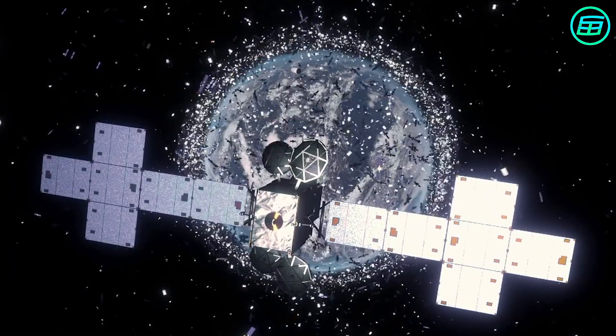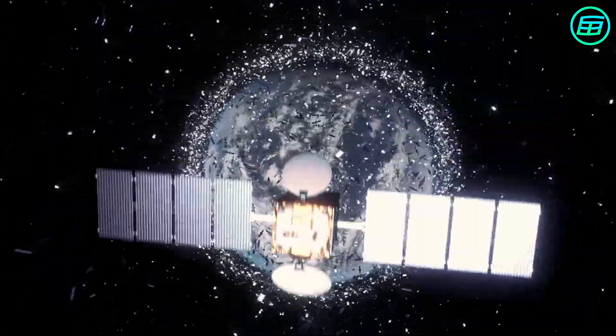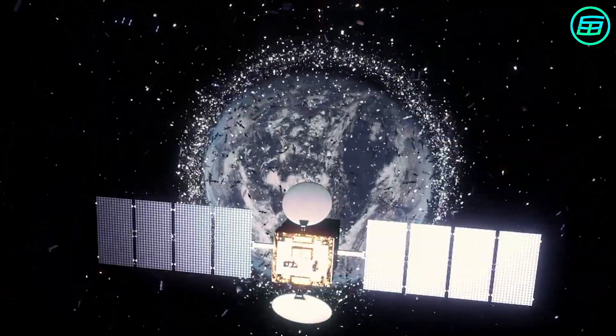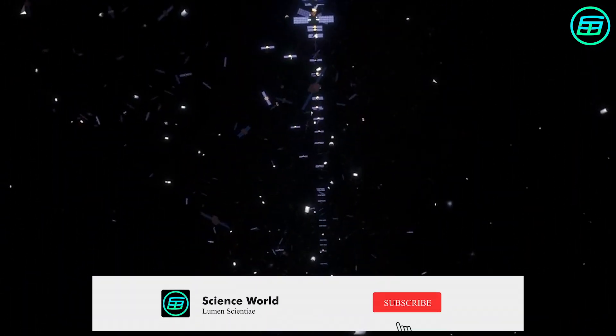As well as derelict spacecraft, there are also other kinds of man-made debris in orbit, including fragments from the disintegration, erosion and collision of satellites, paint flecks, solidified liquids expelled from spacecraft, and unburned particles from solid rocket motors.